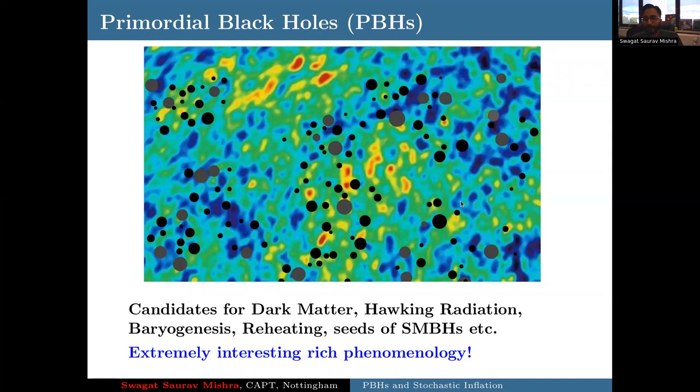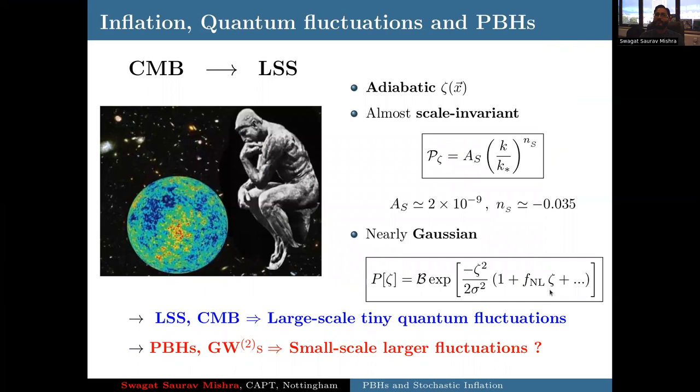I'm rather going to focus on formation of primordial black holes in single field models of inflation. Observations of the universe over the past three decades, especially looking at the tiny temperature fluctuations of CMB and the clustering of galaxies in large scale structure, tells us that present day structure in the universe has formed because of gravitational collapse of tiny adiabatic, almost scale invariant, as well as nearly Gaussian density or curvature fluctuations in the very early universe. These are tiny quantum fluctuations that were created most probably by inflation.